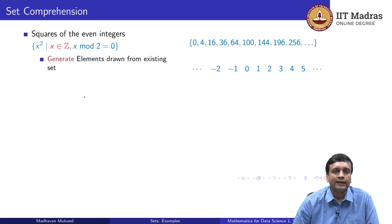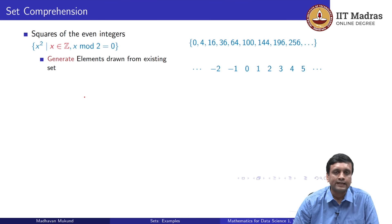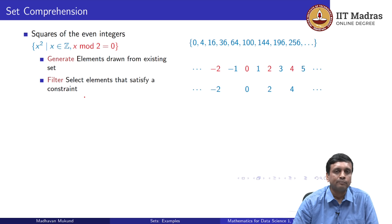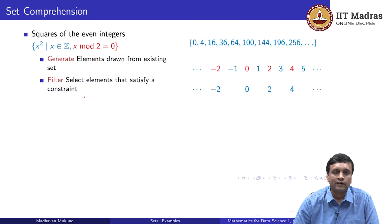We can only build new sets from old sets. Not all the x's that come out are interesting to us, so we filter out those that satisfy a given property. In this case, the property we are looking for is that the number is even — we want those x from ℤ such that x mod 2 equals 0, which is the property that x is even.